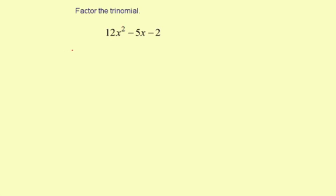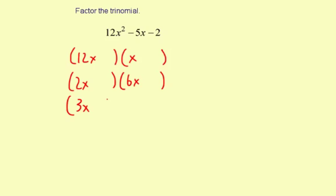And that means there are some different possibilities. You could have a 12x and an x, or it could be 2x and 6x, or it could be 3x and 4x. These are all the different possibilities as far as what multiplies to make 12x².